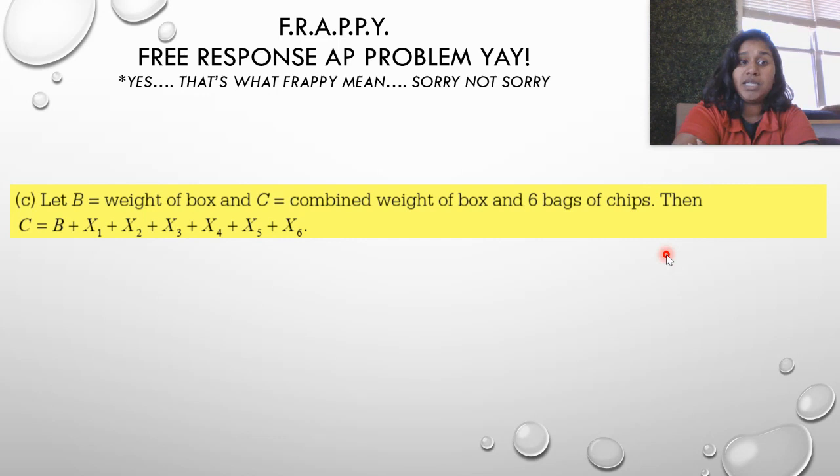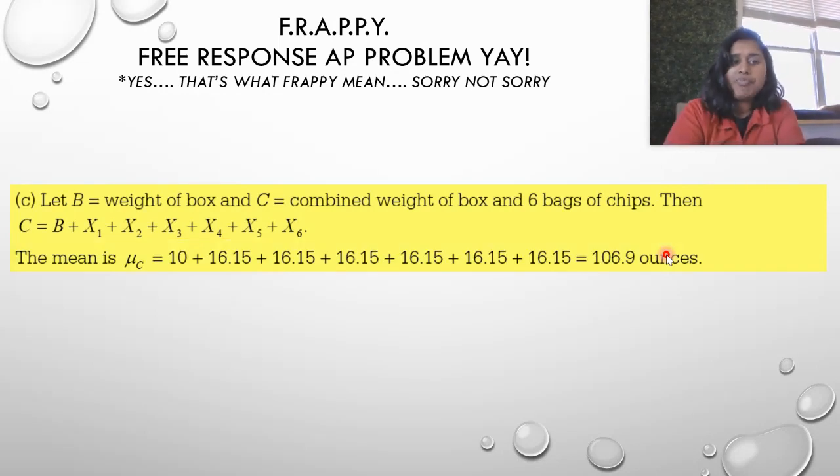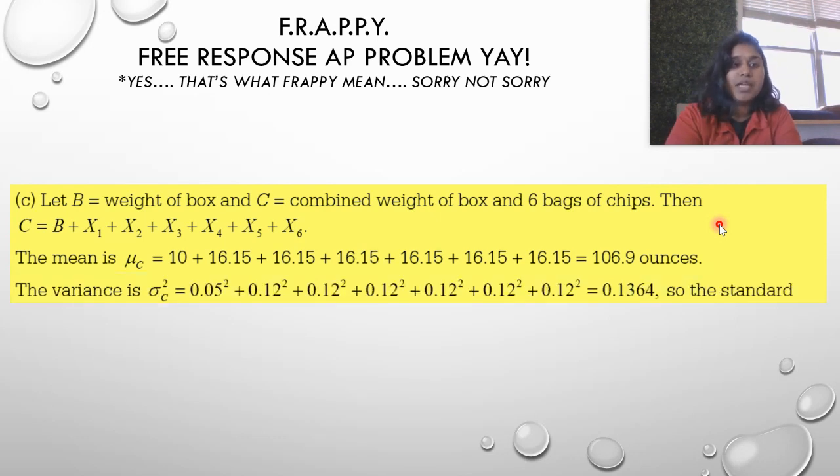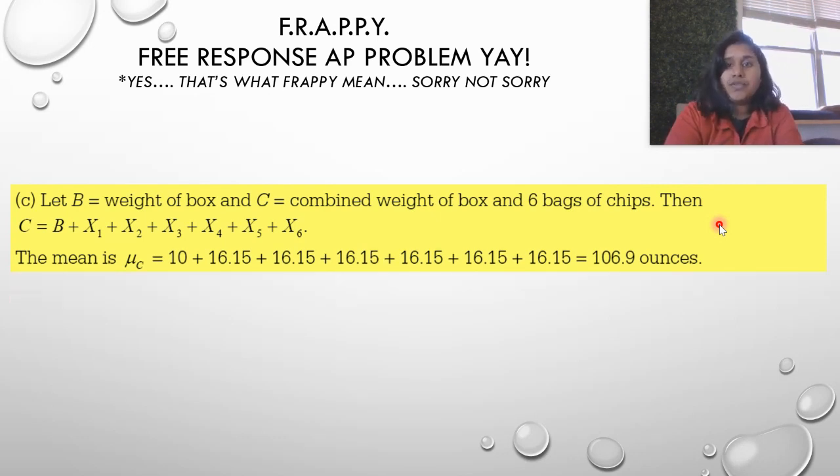X is our discrete variable for the weight of an individual bag of chips. The total weight of the box would be equal to the weight of the original box plus the weight of the six bags. The mean value of the box would be 10 plus 16.15 plus 16.15 six times. I end up with 106.9 ounces. Pretty easy.